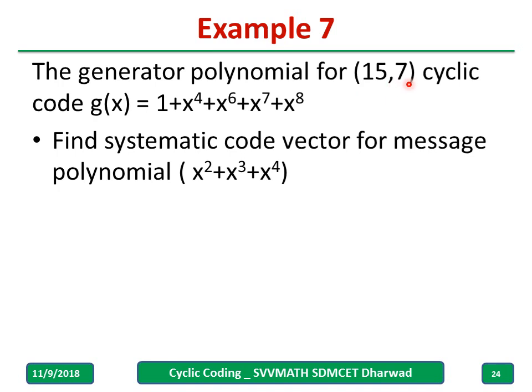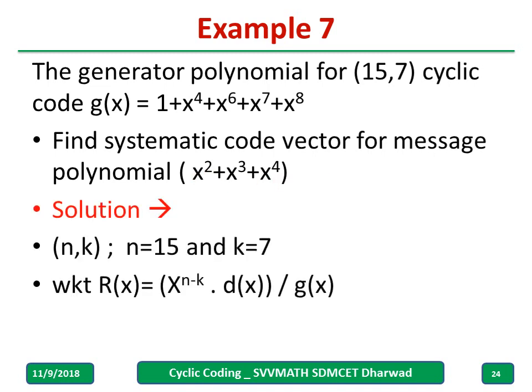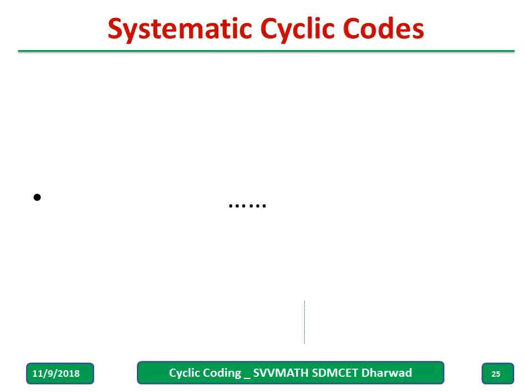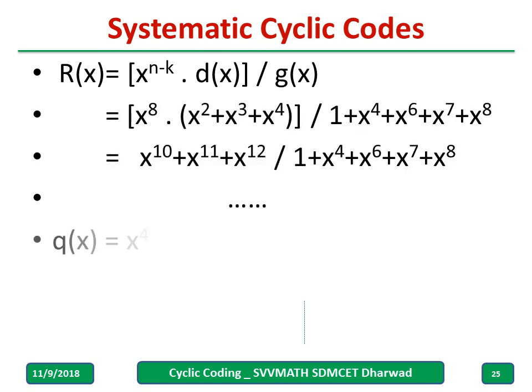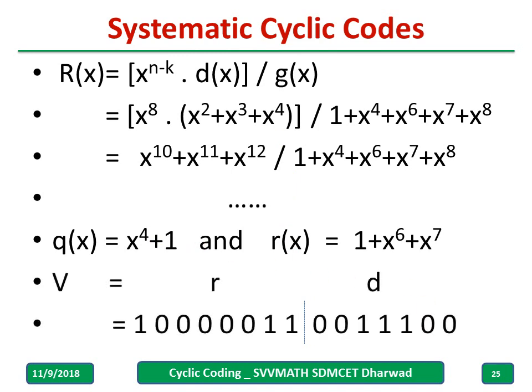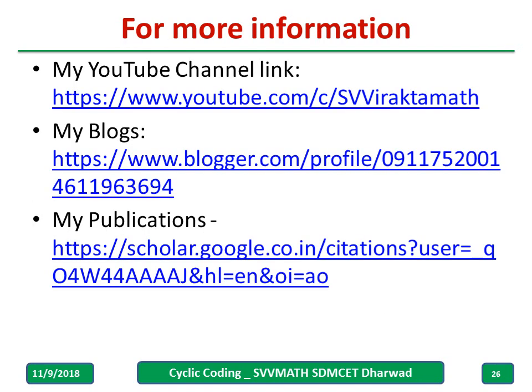Another example: 15,7 and polynomial is given and find a systematic code for this. Data is given. Procedure is same: Xⁿ⁻ᵏ into d(x) divided by g(x). Fill the answer, you will get q(x), you will get r(x). And once if you know q(x), r(x) all of you know how to write a codeword. Using r(x) also write down, using the q(x) also write down. Procedure will remain same. So, this is v(x) using r(x). Similarly I can do using q(x).